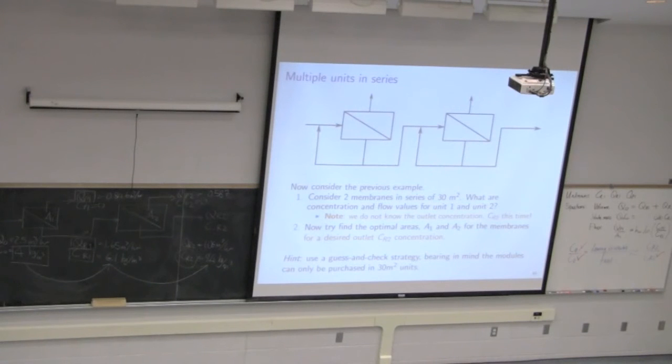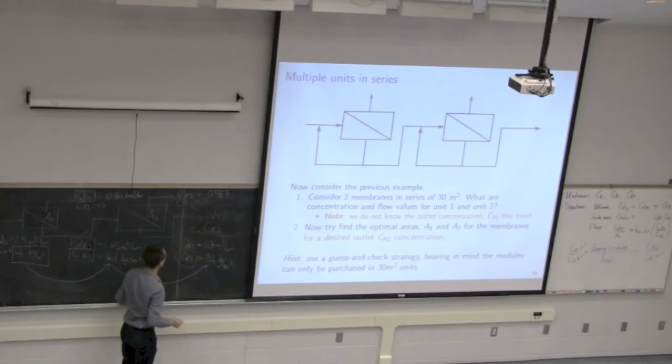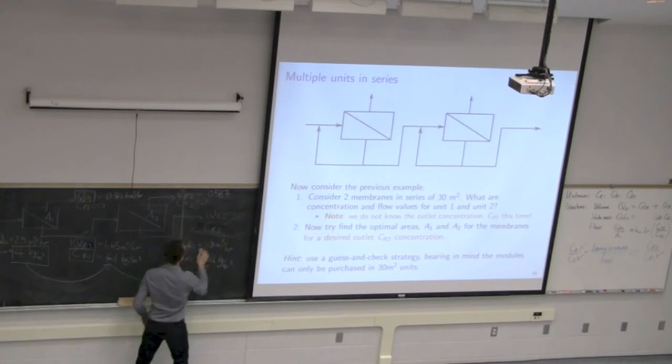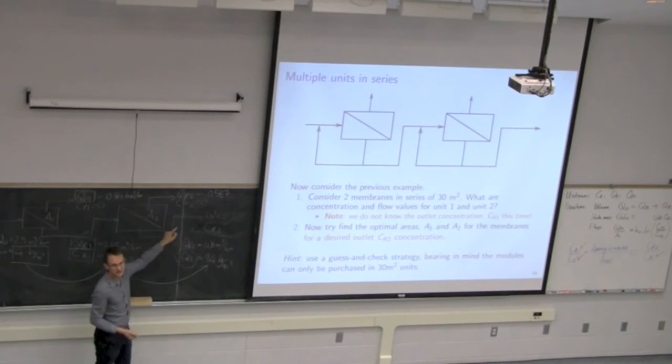Now let's change the problem up a little bit. And this next part says, what if we would like leaving that second membrane, CR2, to be a certain value. So now I'm going to specify CR2. So CR2 is going to be given to me. And this time I'd like to calculate A1 and A2 to get that CR2.